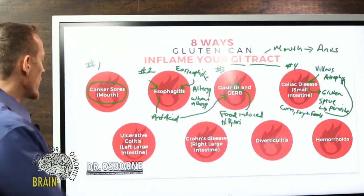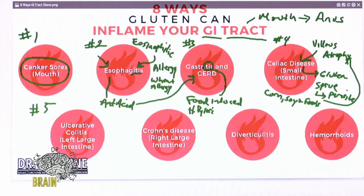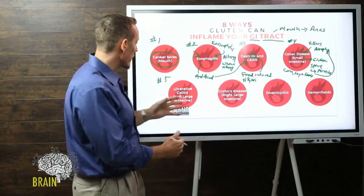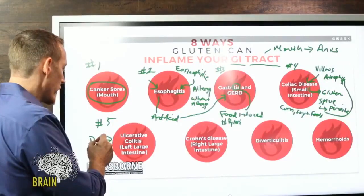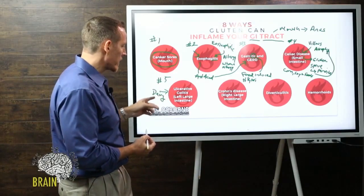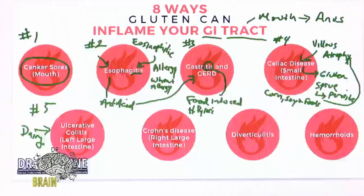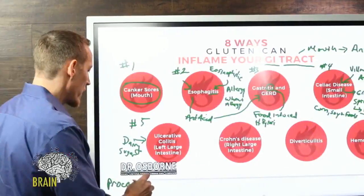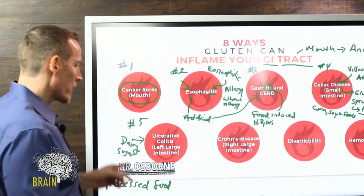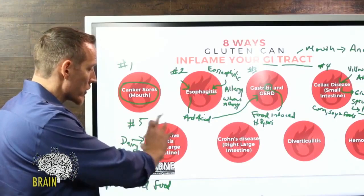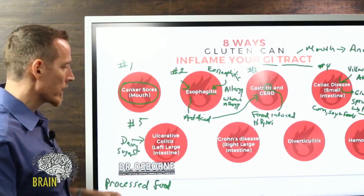Number five is ulcerative colitis — inflammation in the left large intestine. In most cases, gluten is always an issue, but dairy is another big contributor. If you're gluten-free but consuming a lot of dairy and still have GI inflammation, ask your doctor to test for that. Sugar also plays a big role, as does processed food. These form a kind of trifecta — dairy, sugar, and processed food — beyond gluten as major culprits in ulcerative colitis.